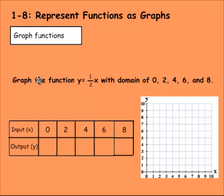So let's look at this one. We have the graph of the function y equals 1 half times x with a domain of 0, 2, 4, 6, and 8. I already have the domain in here. We need to figure out the range or the output. So we know y equals 1 half times x. If this is x, we just need to multiply each of these times 1 half to find out the output.